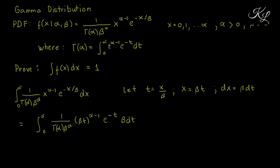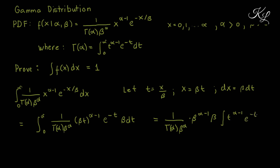Now we can move the constants out of the integral. The term 1 over gamma of alpha is a constant, and beta raised to alpha minus 1 as well as the remaining beta factor are also constants. What remains inside the integral is t raised to alpha minus 1 times e raised to negative t, dt, from 0 to infinity.